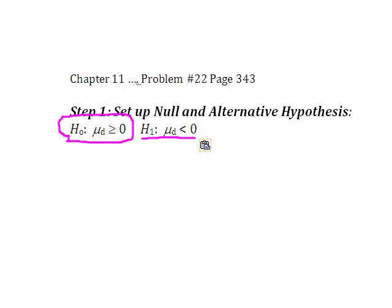So because of that, I know for one that I'm going to be testing at the lower end of the curve and that my alternative hypothesis is going to be a less than, and my null hypothesis is going to be a greater than or equal to, because remember, they both have to account for 100% of the possibilities.